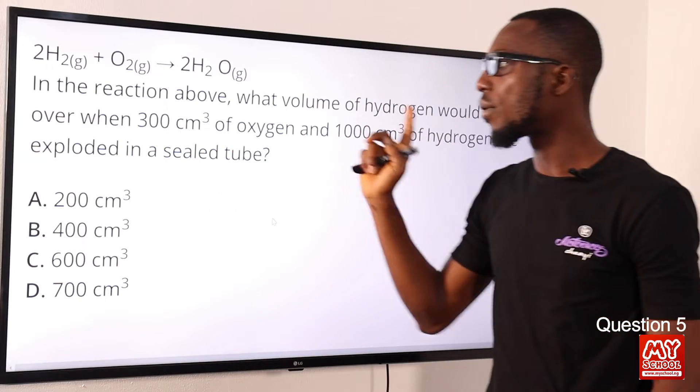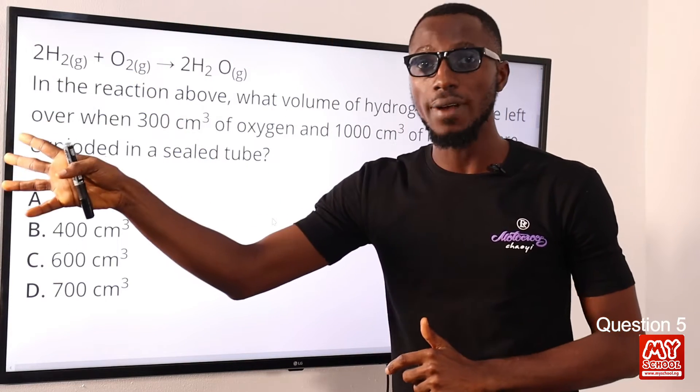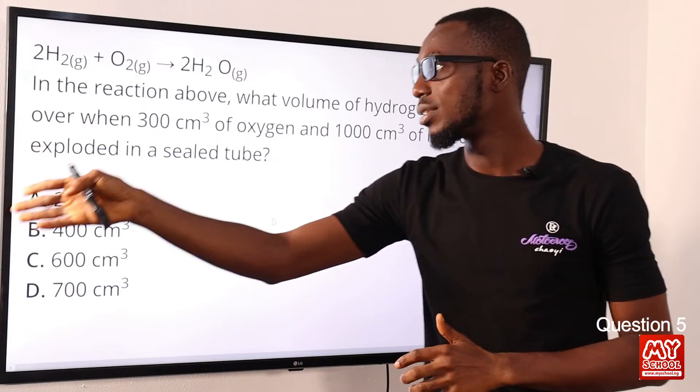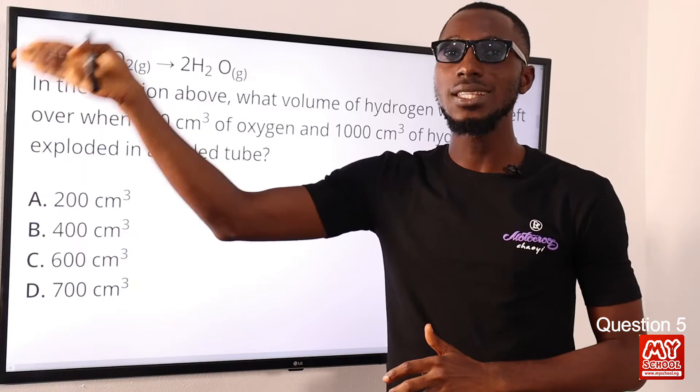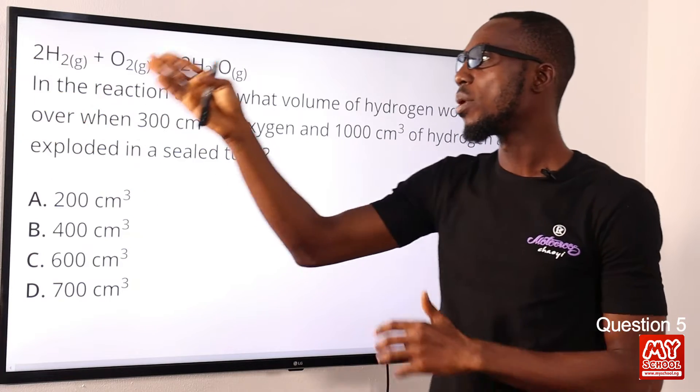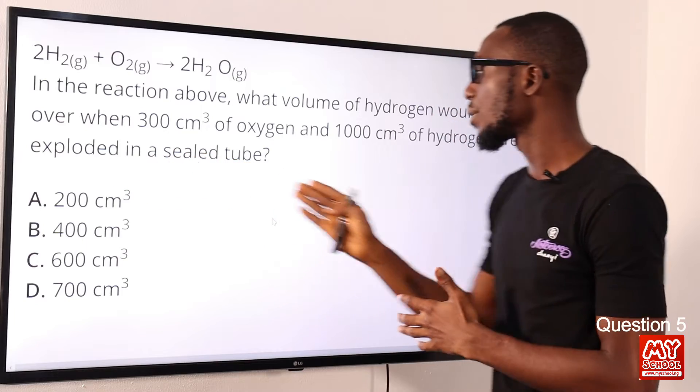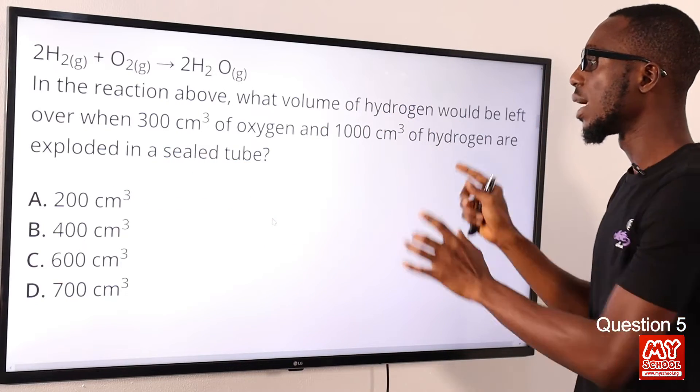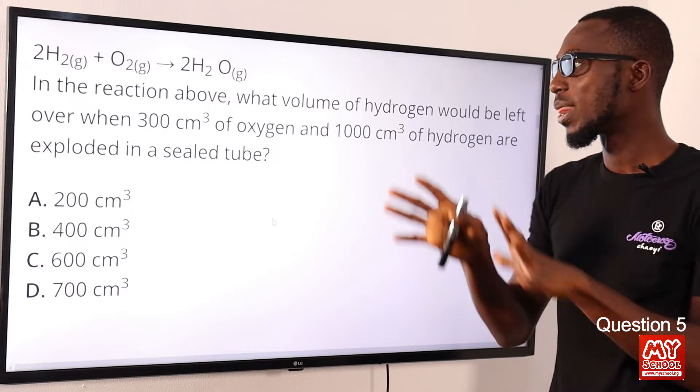That means we are told from the question that we use 300 of oxygen. One of oxygen will require two of hydrogen—that means 5 of oxygen will require 10 of hydrogen. Therefore, 300 of oxygen will require 600 of hydrogen. So we've used 600 of hydrogen to react with 300 of oxygen out of the total of 1000 provided.